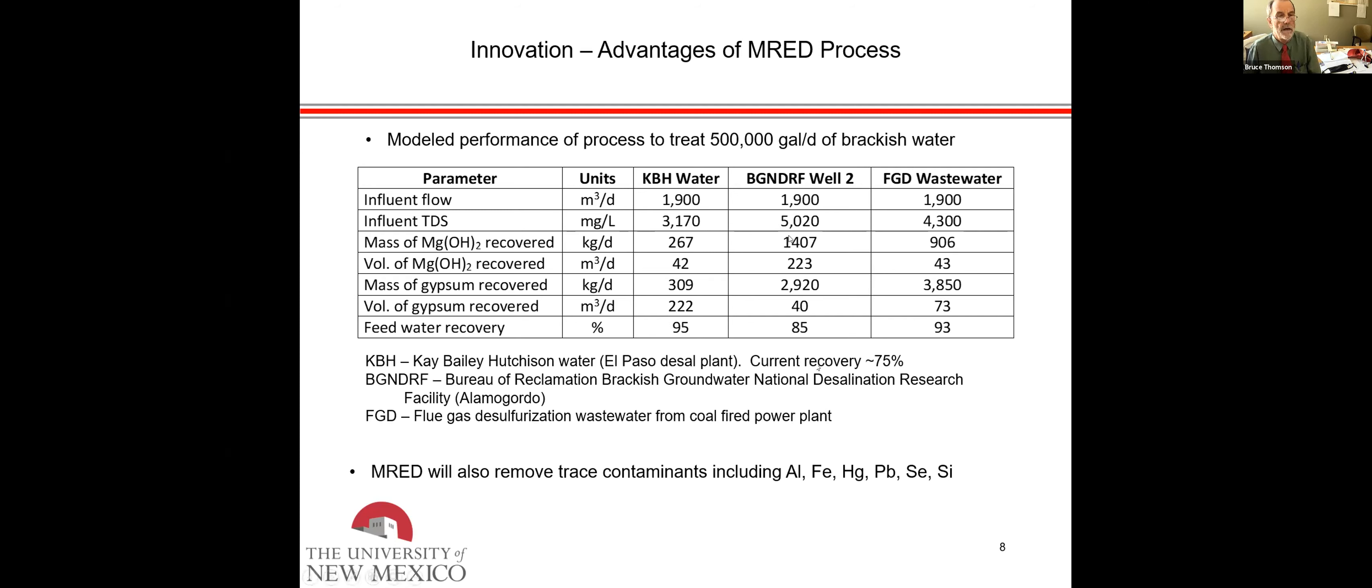There's a Bureau of Reclamation demonstration facility in Alamogordo. We think we can recover 85% of the water, and again a lot of gypsum and magnesium hydroxide. The last one is flue gas desulfurization from a coal-fired power plant. In addition to these commodity minerals, this process will also reduce trace contaminants, including aluminum, iron, mercury, lead, selenium, and silica.